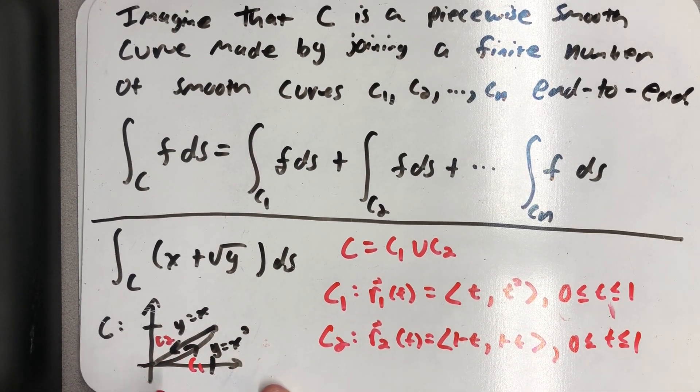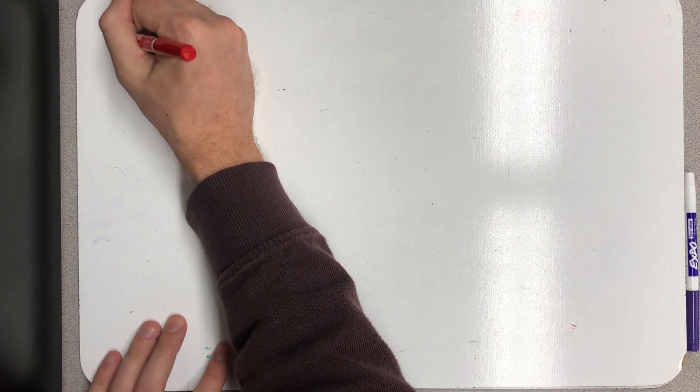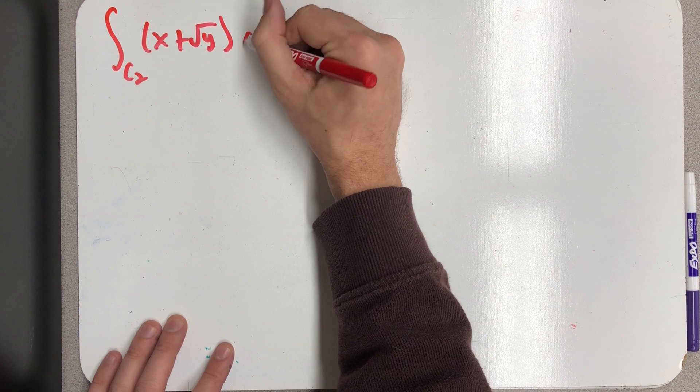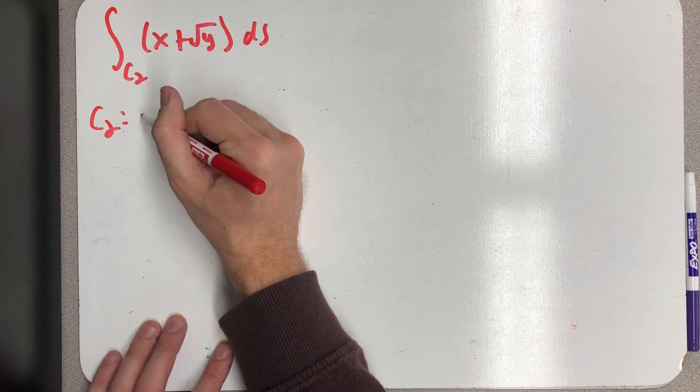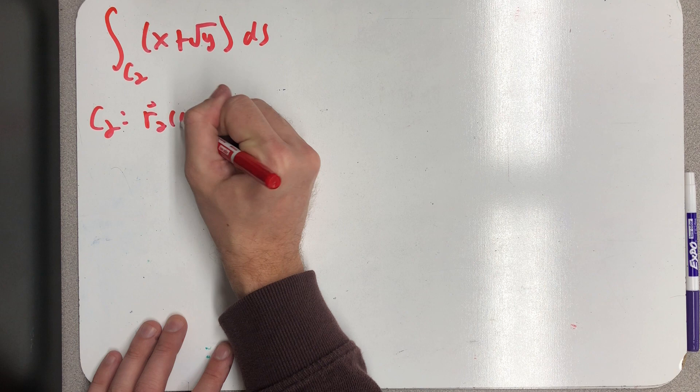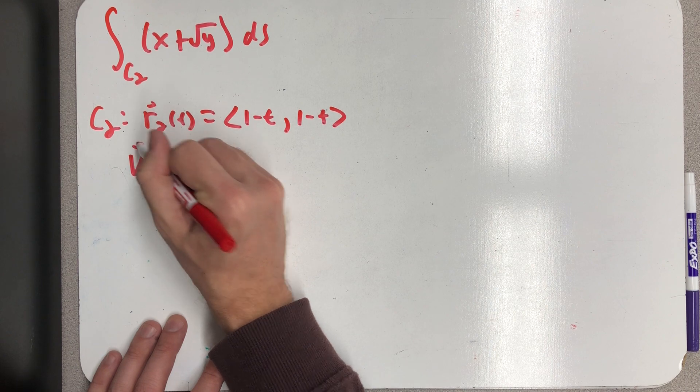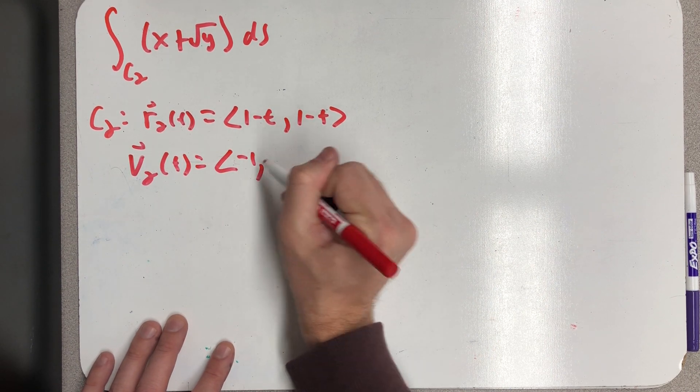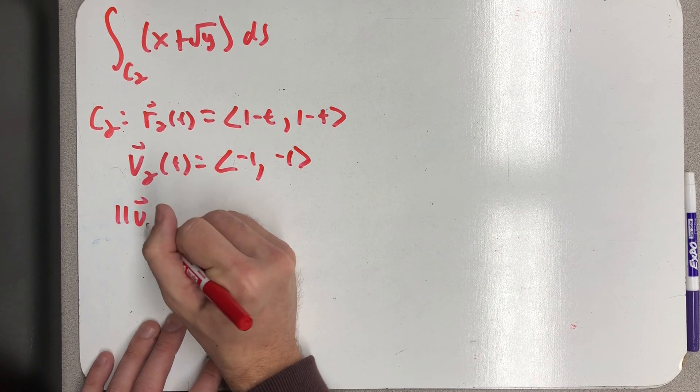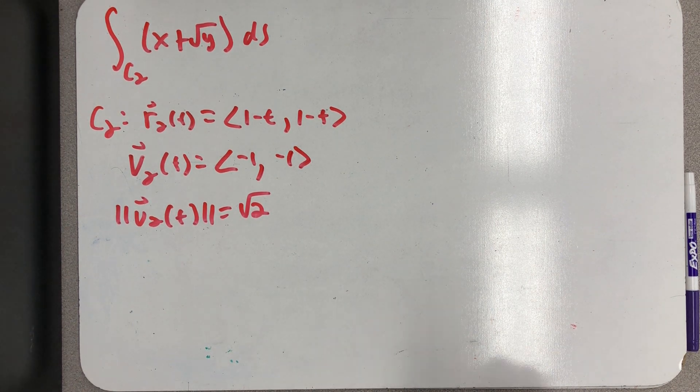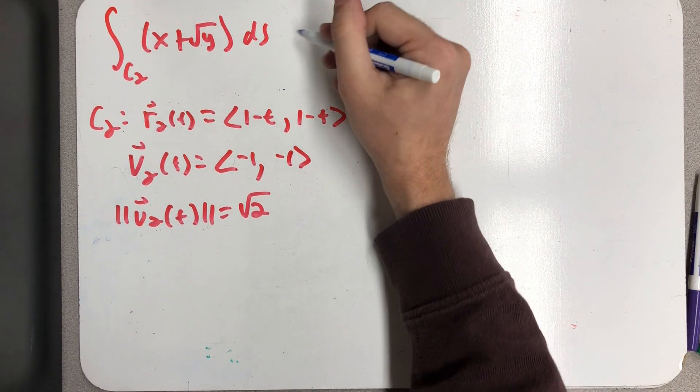But now we need to remember that we need to now integrate over the next part, over this path. So now I find the line integral over the second part of the path. The speed function here is a little nicer.